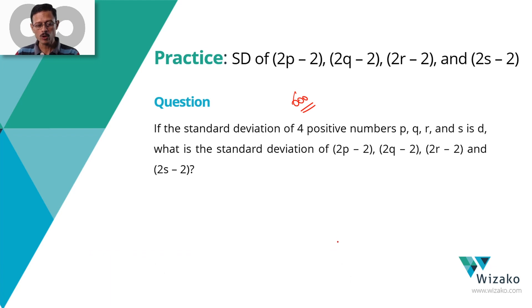If the standard deviation of four positive numbers P, Q, R and S is D, you know the standard deviation for these four numbers. What we need to compute is the standard deviation of 2P-2, 2Q-2, 2R-2 and 2S-2.